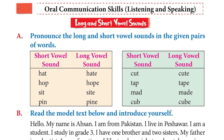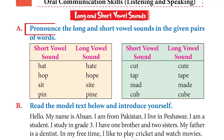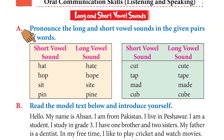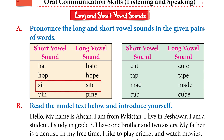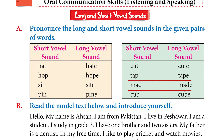Now let's look at this concept in the context of our question. The question is: pronounce the long and short vowel sounds in the given pairs of words. Short vowel: hat. Long: hate. Hop, hope. Sit, sight. Pin, pine. Cut, cute. Tap, tape. Mat, made. Cub, cube.